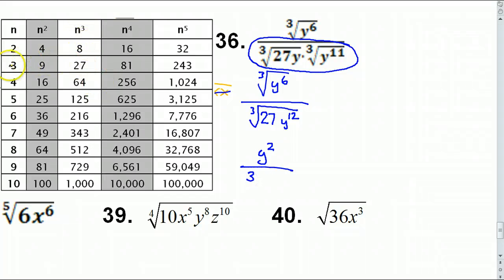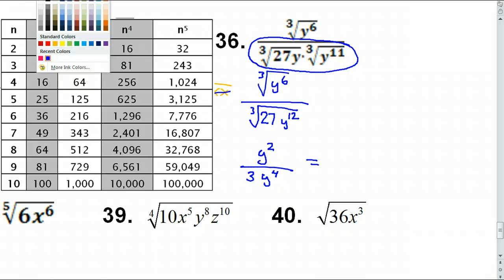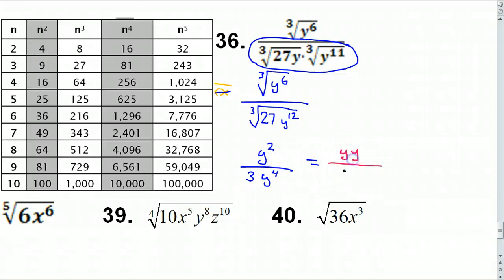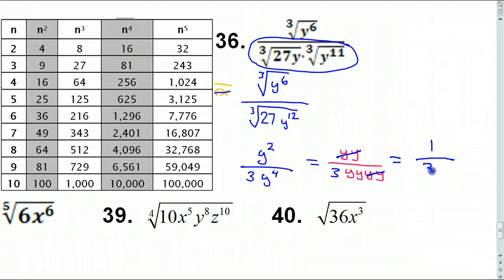The cube root of 27 is 3 — you don't just divide, it's not a 9. Now simplify the Y's: Y squared over Y to the 4th. Y squared is Y·Y; Y to the 4th is Y·Y·Y·Y, with 3 sitting there. The two Y's cancel two of the four Y's, leaving Y squared on the bottom with the 3. Final answer: 1 over 3Y squared.